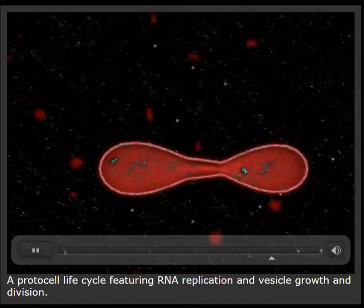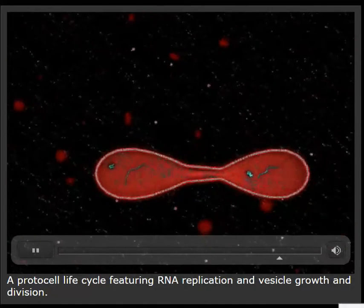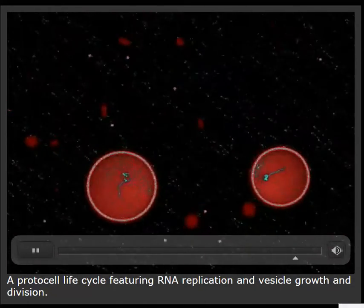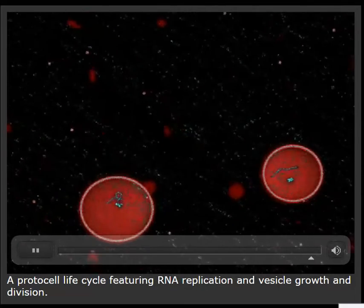The protocell eventually splits into daughter protocells, with the contents of the original protocell randomly divided between the daughters.